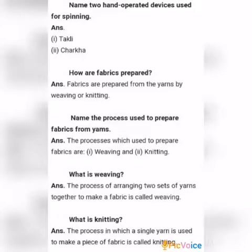Next question: Name two hand-operated devices used for spinning. Moving on — how are fabrics prepared? Answer: Fabrics are prepared from yarns by weaving or knitting.